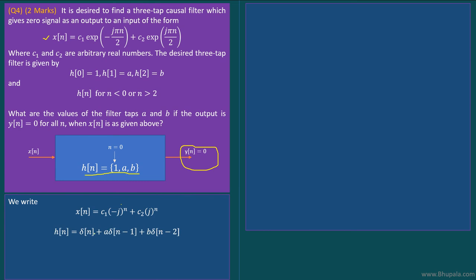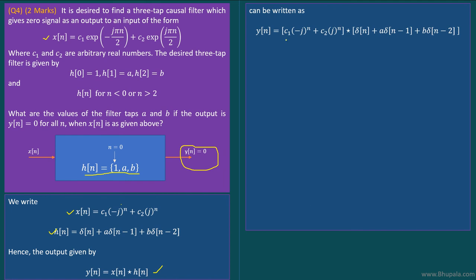Similarly, we can write the impulse response as h[n] = δ[n] + a·δ[n−1] + b·δ[n−2]. The output of the system is the convolution of x[n] with h[n]. Substituting x[n] and h[n], we get y[n] = (c1·(−j)^n + c2·(j)^n) * (δ[n] + a·δ[n−1] + b·δ[n−2]).